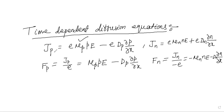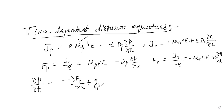These two flux equations are known as the time-dependent diffusion equations. We have already derived that del P by del t, the variation of hole concentration with respect to time, can be written from the continuity equation as: minus del F_P by del x, plus the rate of generation G_P, minus the rate of recombination P divided by tau_pt, the excess minority carrier lifetime.